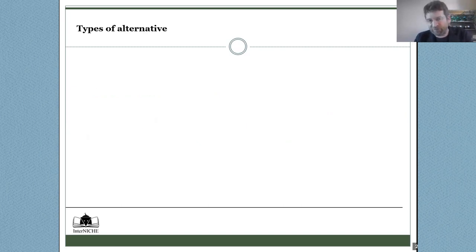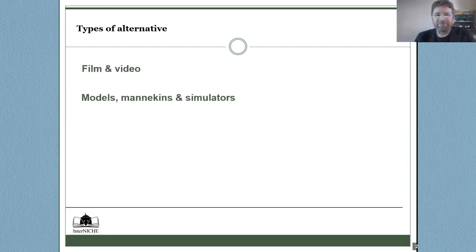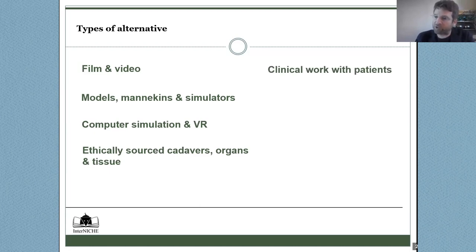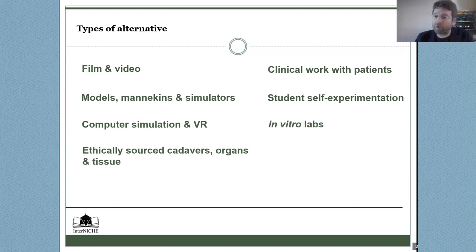There are many different types of alternative: first, film and video; models, mannequins, and simulators; computer simulation and virtual reality; ethically sourced cadavers, organs and tissues — both human and animal; clinical work with patients — human and animal; student self-experimentation, non-invasive; in vitro laboratories; and ethical field studies. We're going to look at each of these different types with some examples.